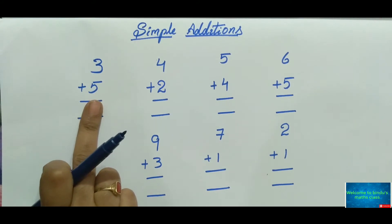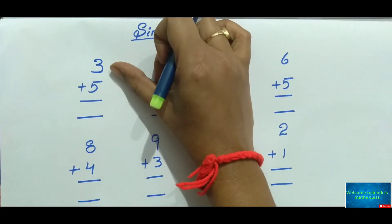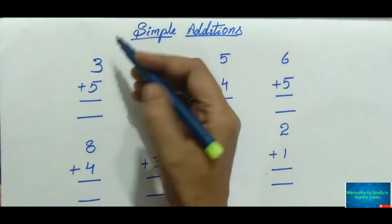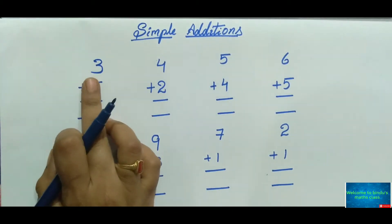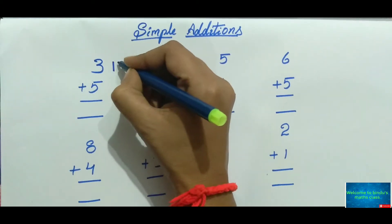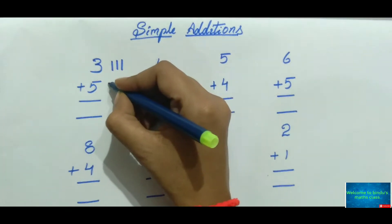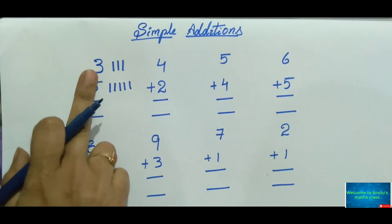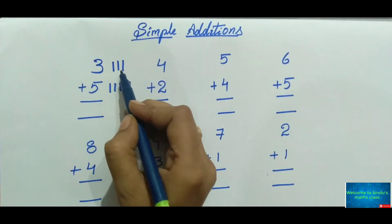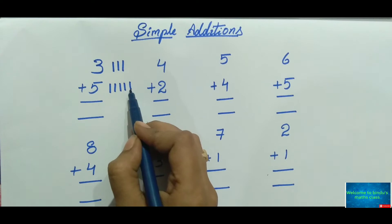Let us start our class. For three plus five, I will show you three methods for finding the addition of simple digits. The first method is to draw lines. For three plus five, draw the number of lines for each number. For three, draw three lines: one, two, three. For five, draw five lines: one, two, three, four, five.